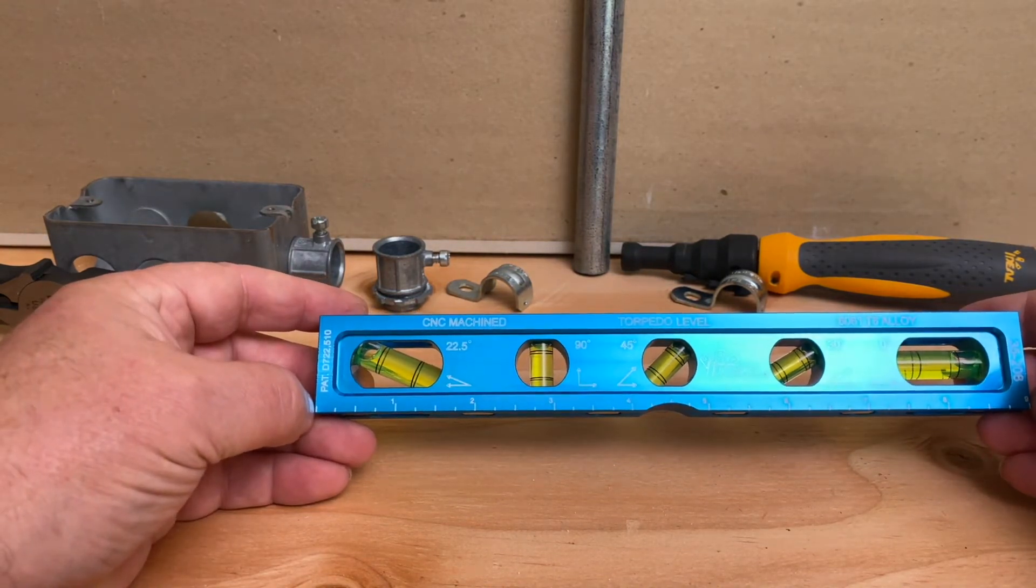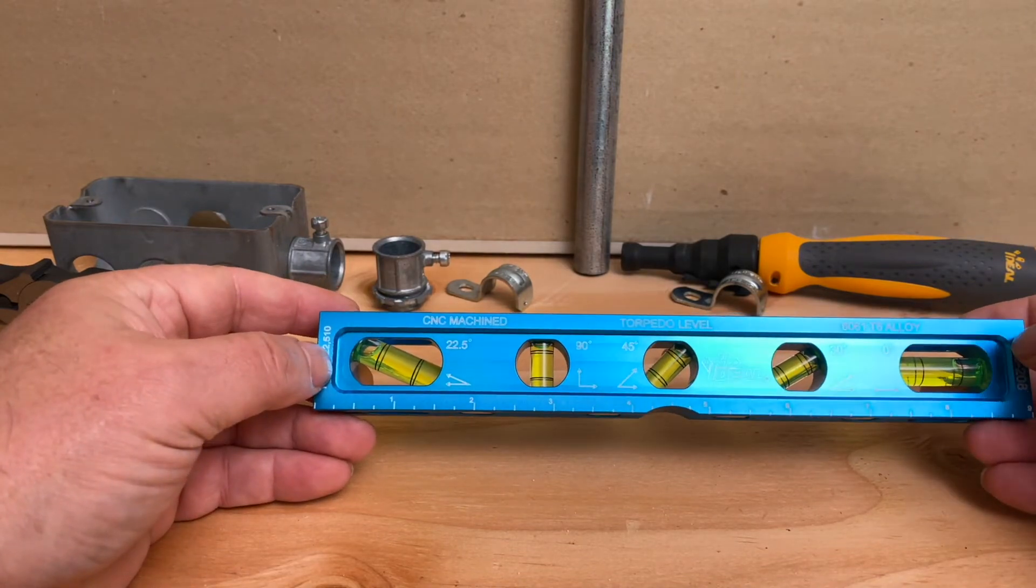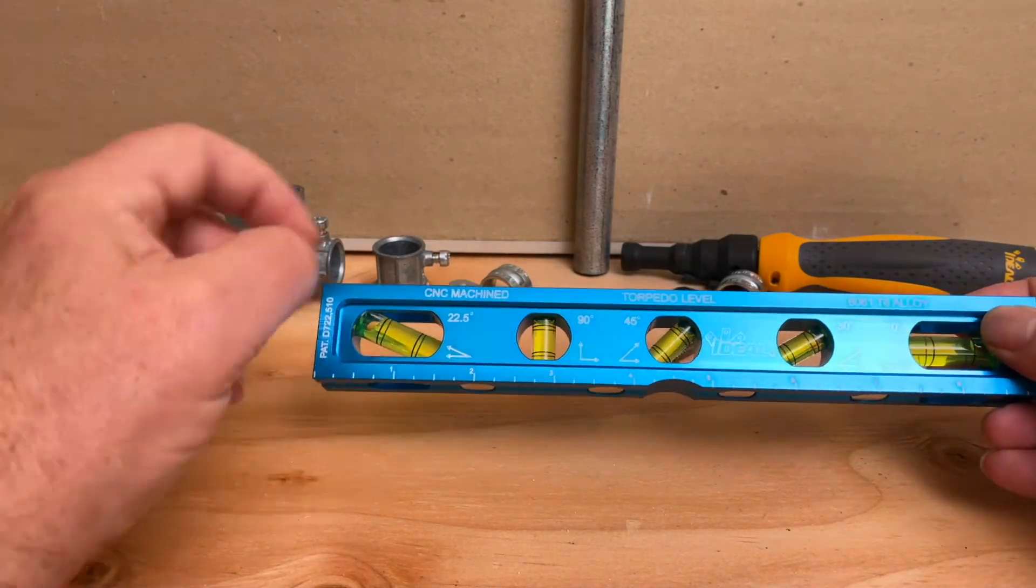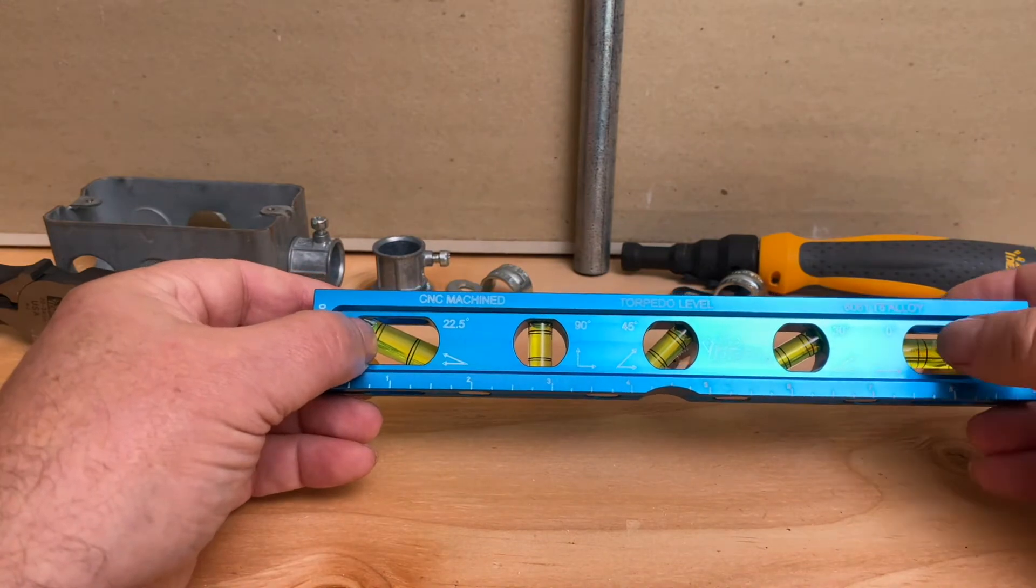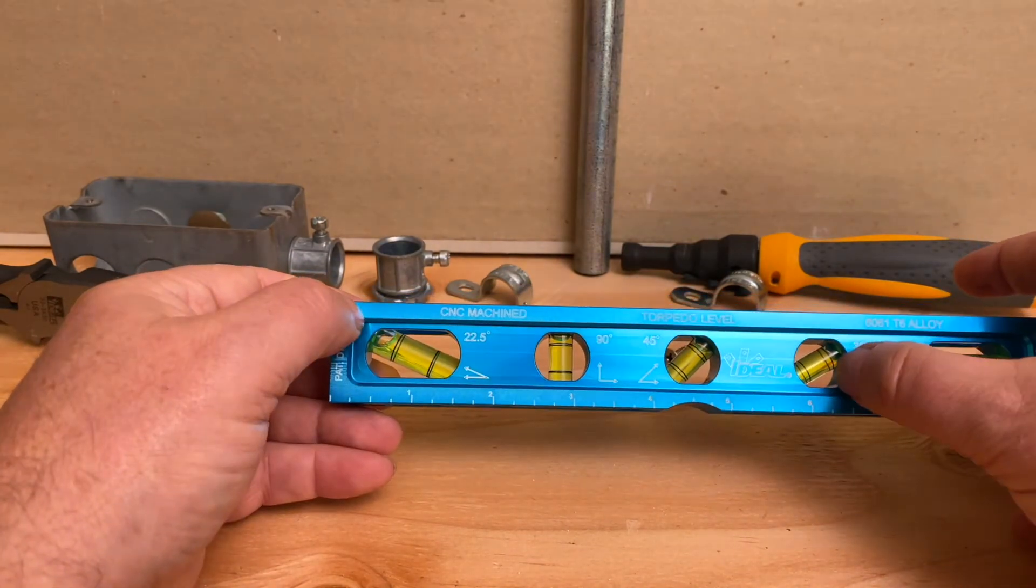You have a ruler on this side, it's a nine inch level and what's different here is you don't have just the typical zero, 90 and 45. You also have 22 and a half and 30 degrees.